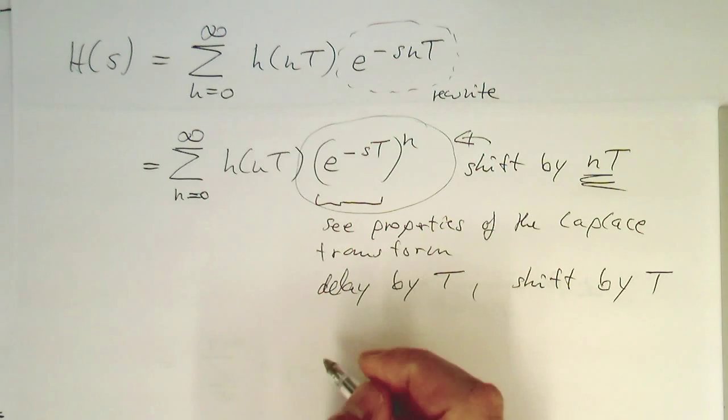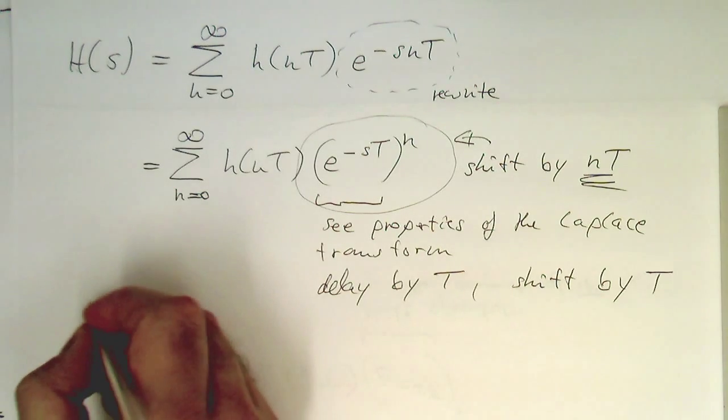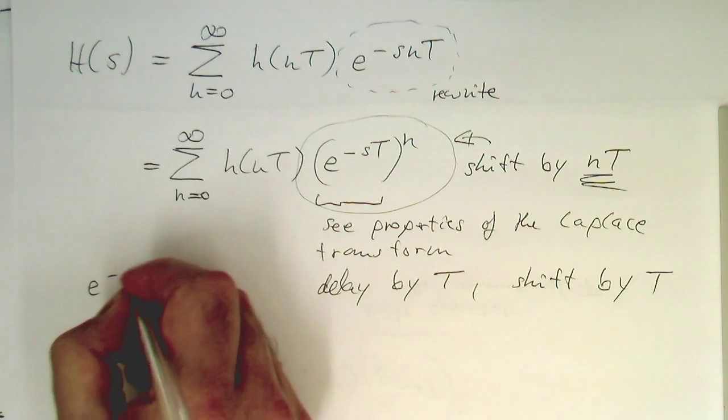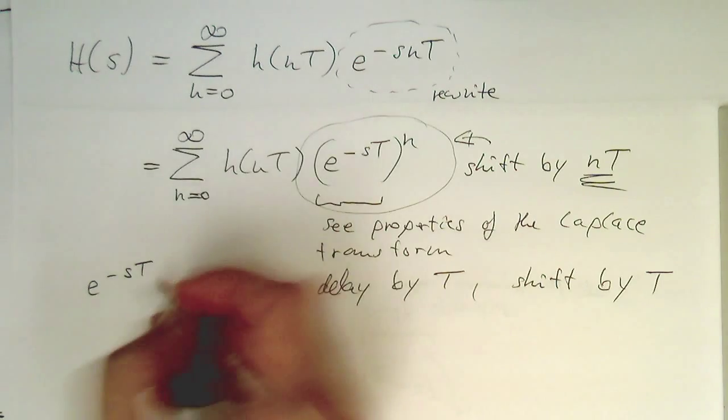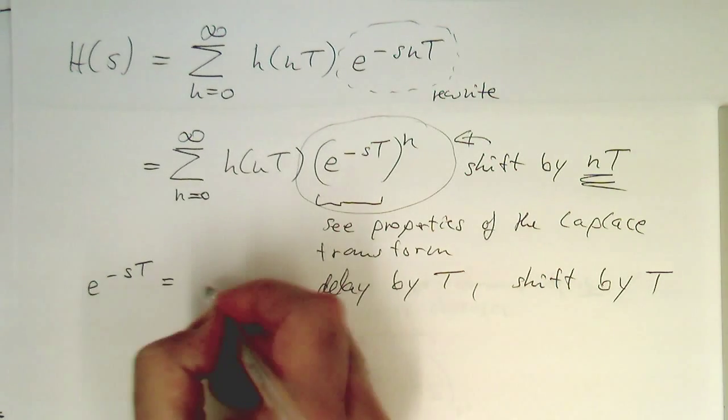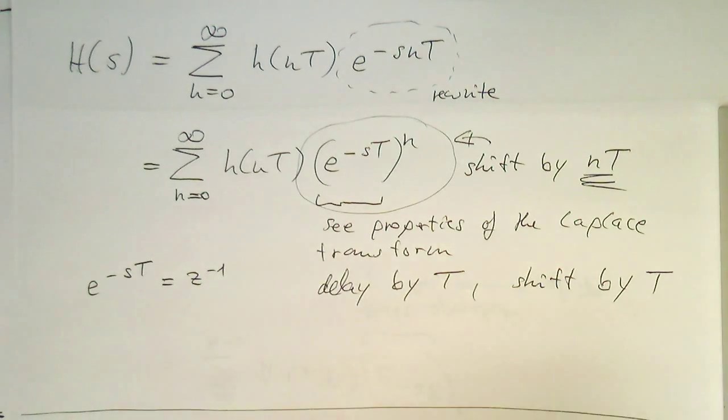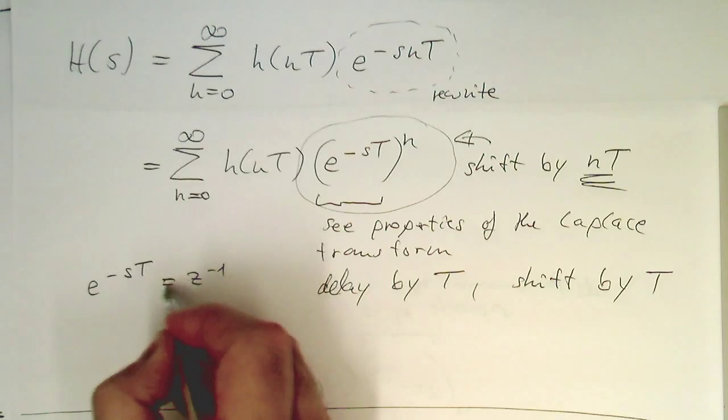Now the convention is the following. That this one here. This term e^(-sT). This is z^(-1). That's defined as this one here.